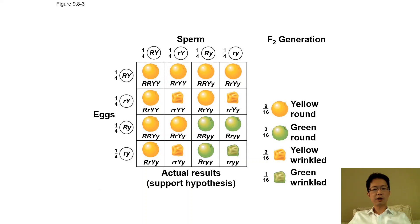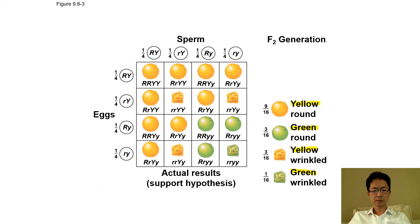This dihybrid cross looks very complicated. In it, we study two traits: pod color, which can be yellow or green, and pod shape, which can be round or wrinkled.